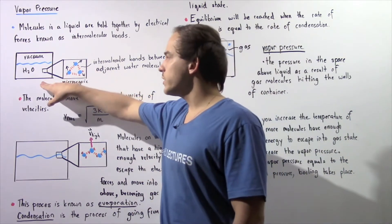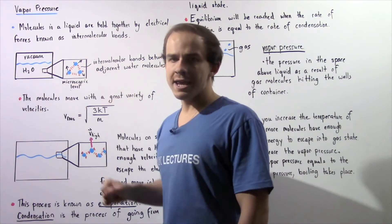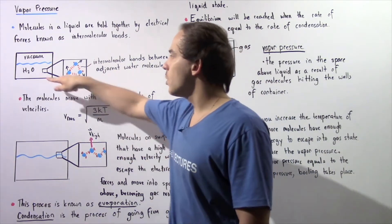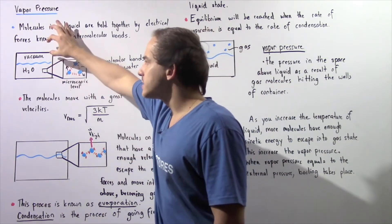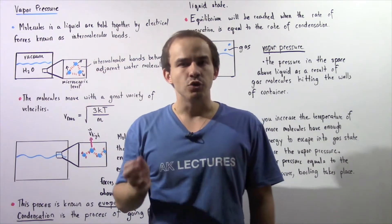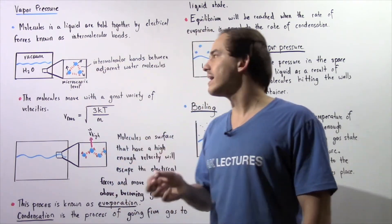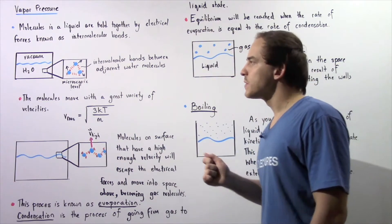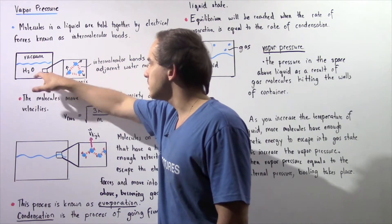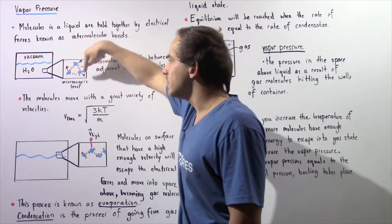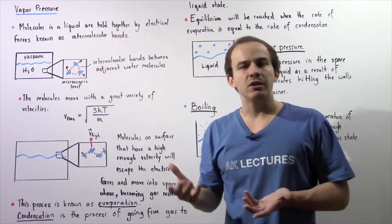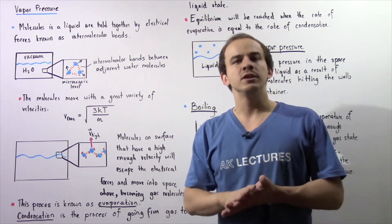Let's suppose we have the following closed container, and inside this closed container we have a liquid — let's suppose water. In the space above the liquid, we have a vacuum, so an absence of atoms and molecules. If we take a microscope and zoom in to the microscopic level, we'll see that the liquid molecules, the water molecules, are moving about with a great variety of velocities.